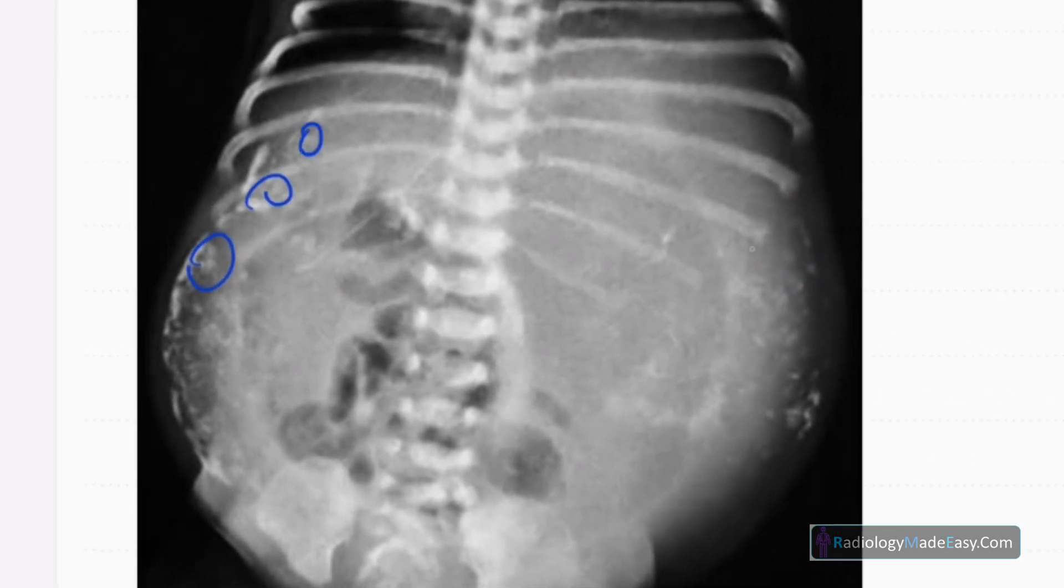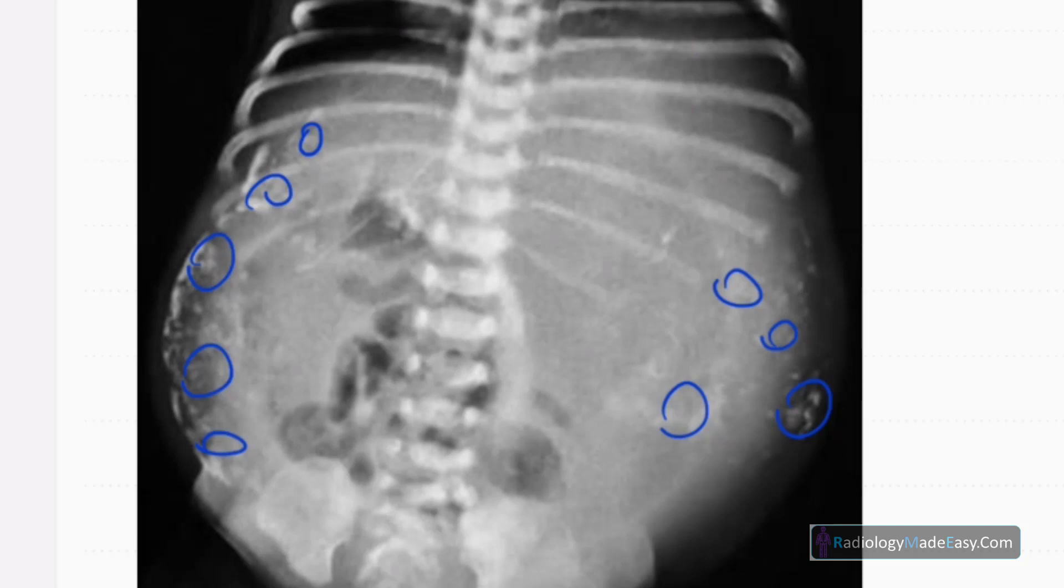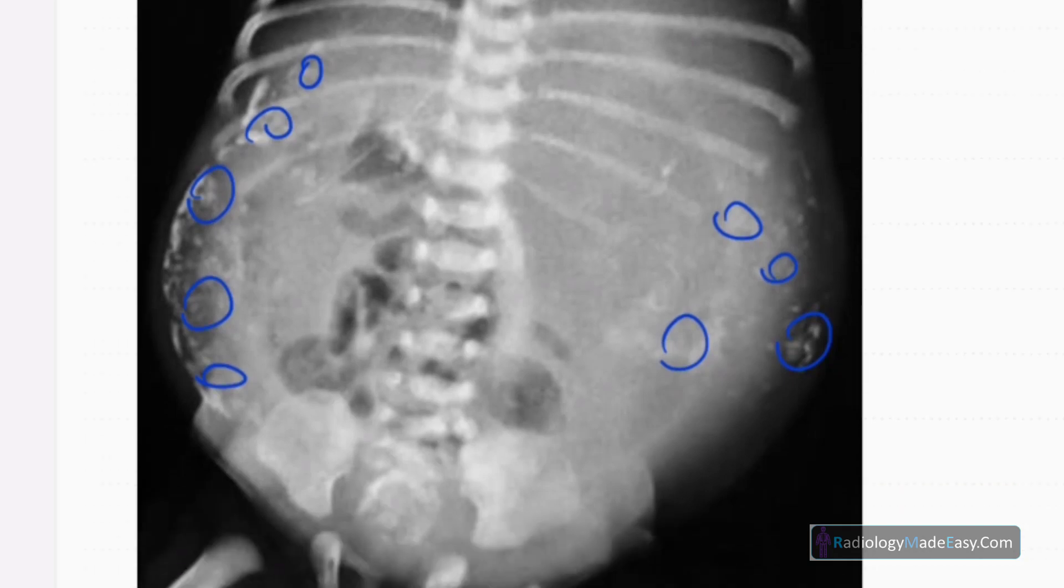You can see multiple punctate opacities in the abdomen. Those are calcifications mainly distributed peripherally. The bowel loops are centrally placed here, so no bowel obstruction, no significant dilatation of the bowel loops.